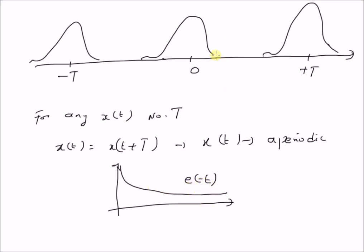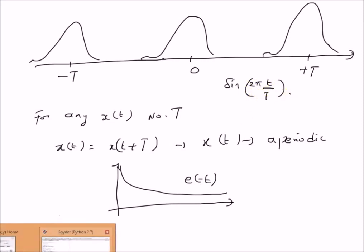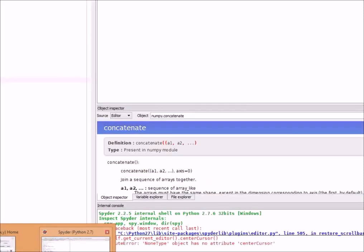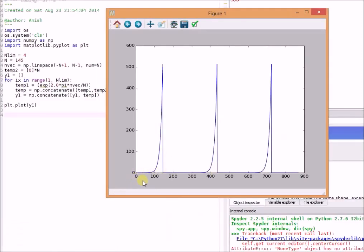A good example of a periodic signal is sin(2π t / T). Now let us look at some simulations to illustrate the periodic signals. Here is a periodic signal that has an exponential structure in each period and it repeats with a period of 295 points or time units.